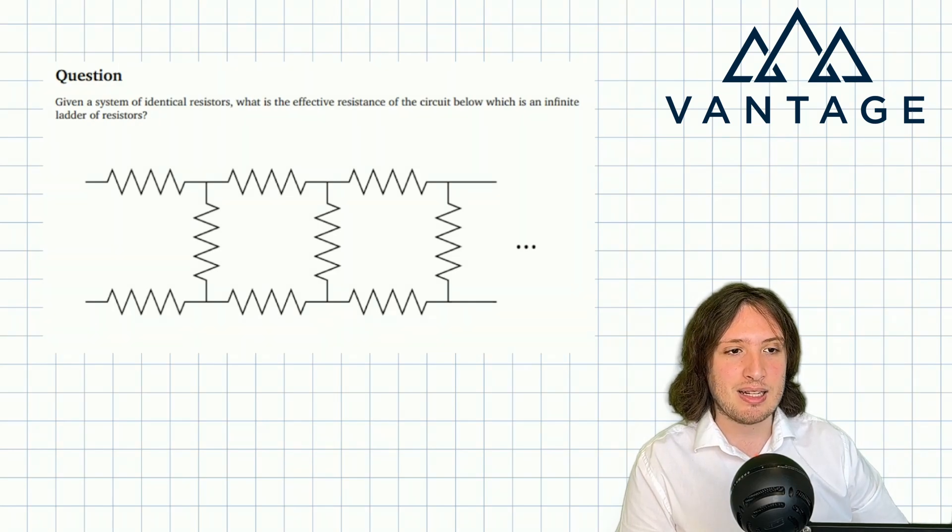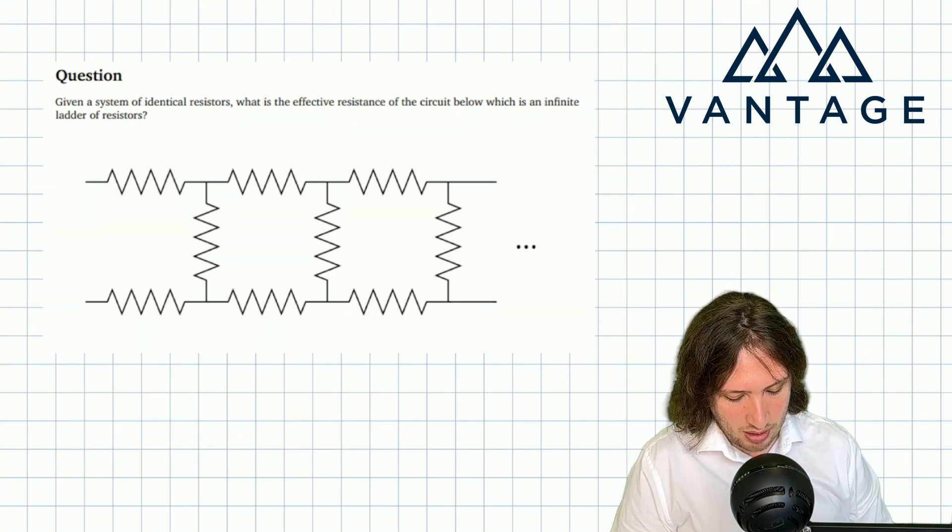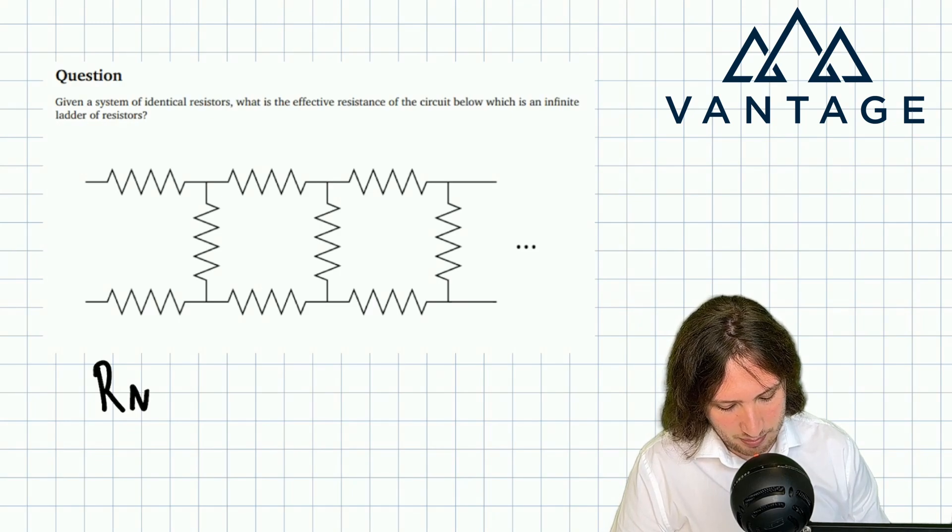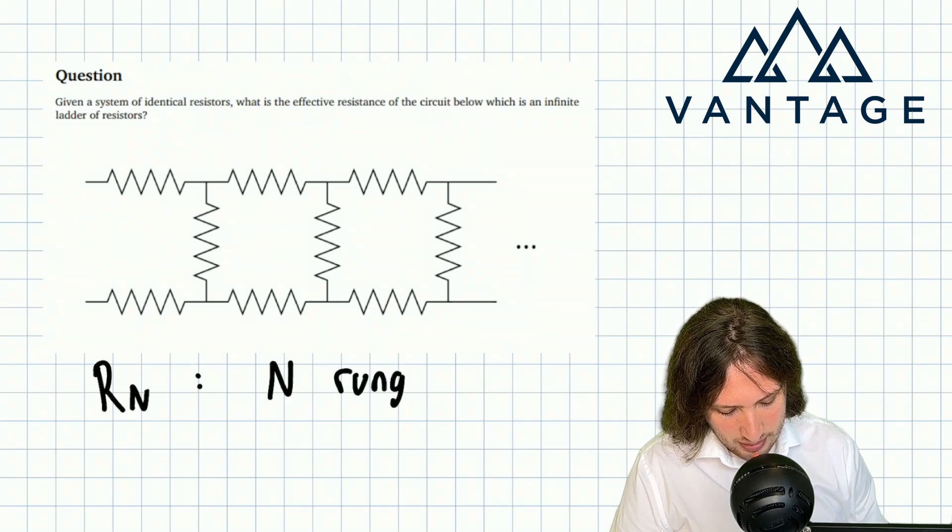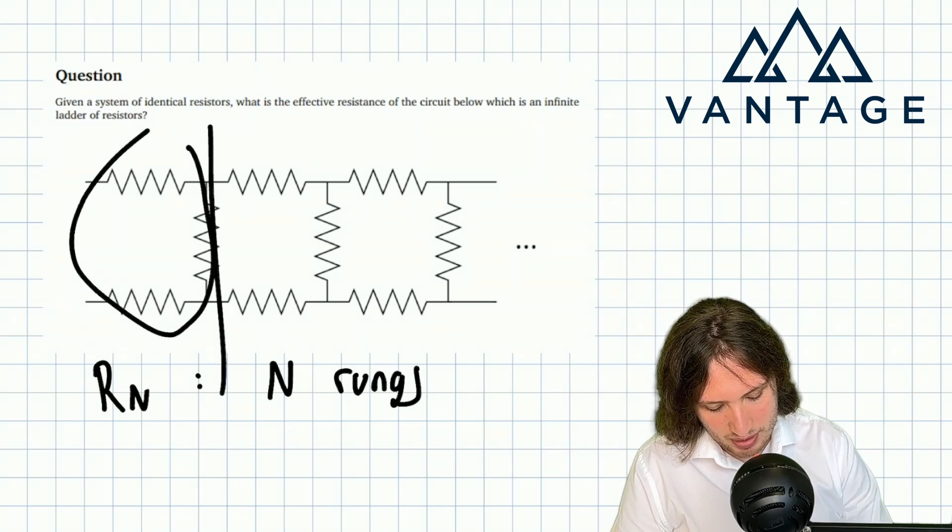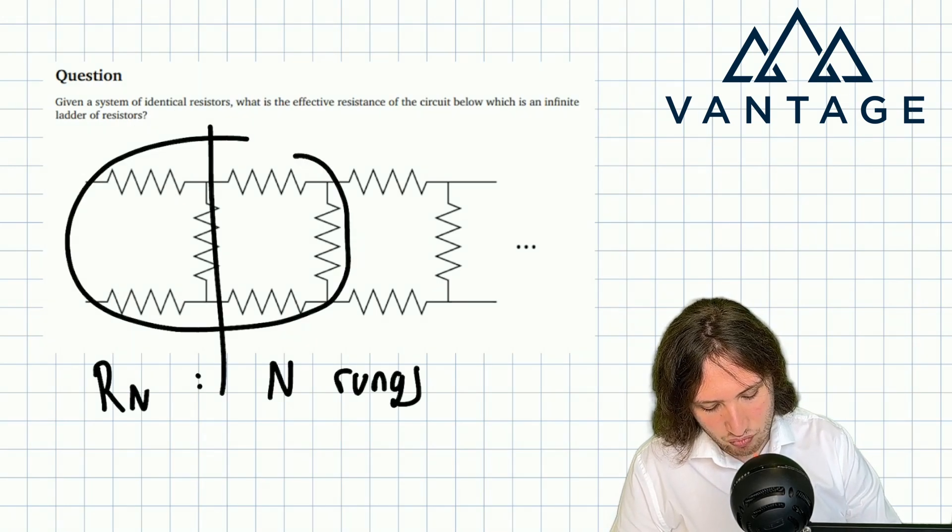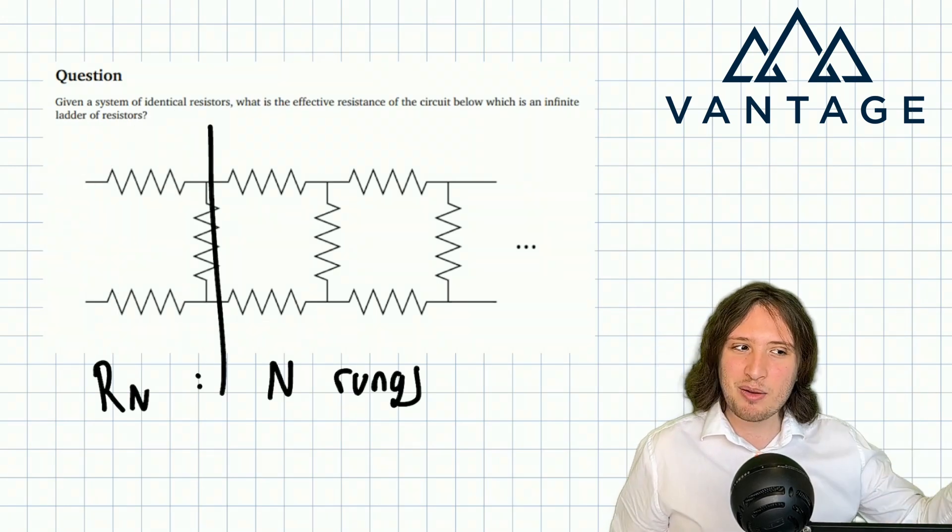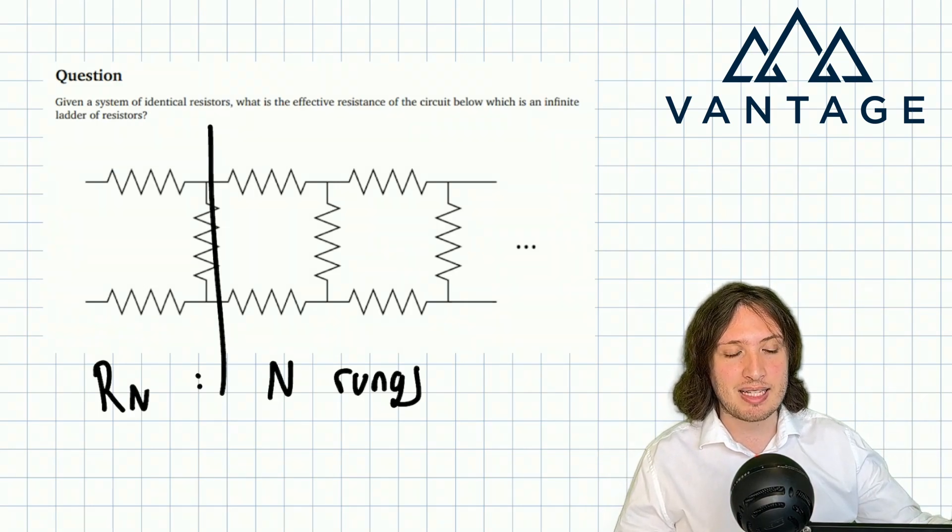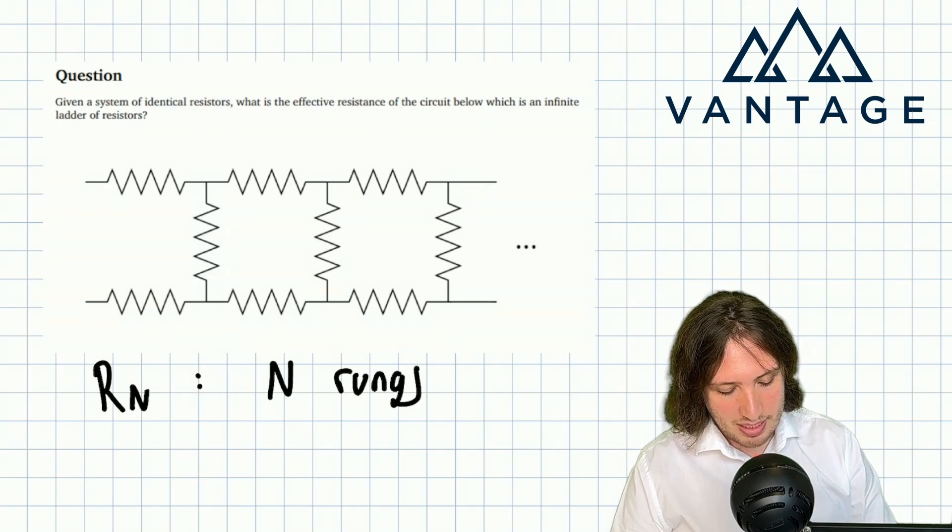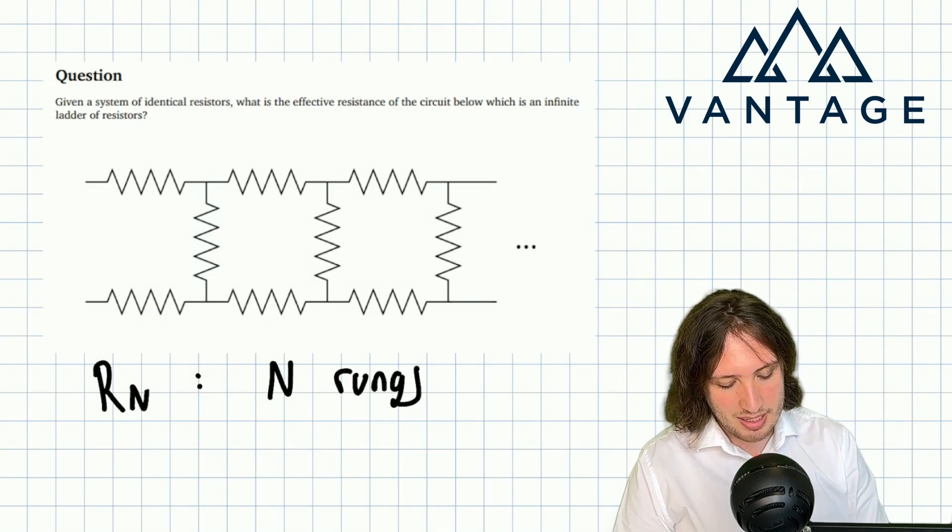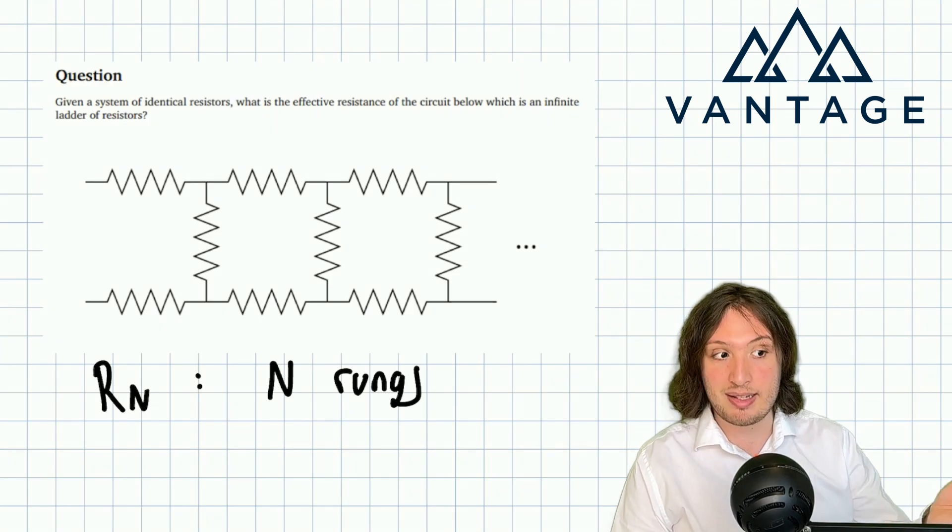So why don't we write Rn for the system when I've got n rungs. In other words, if I stop there the effective resistance of just this would be R1. If I add the next rung it would be R2. Why don't I think about the finite versions and see if this can give us the insight to think about the infinite limit, because really it's so important whenever we're dealing with infinity to remember that really in the back of our minds it's a limit.